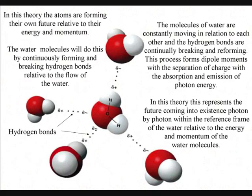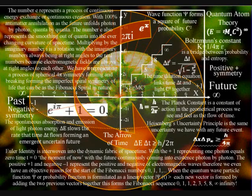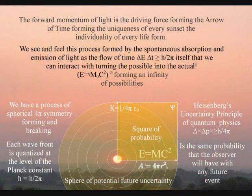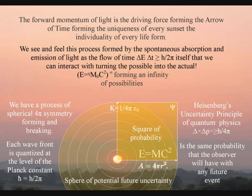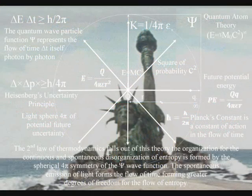Another perfect example of this is photosynthesis with the future coming into existence with plant growth relative to photon energy cascading down from the sun. This process also forms greater degrees of freedom for entropy or disorganization as the future unfolds.